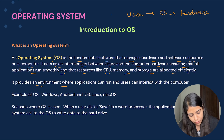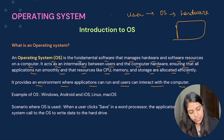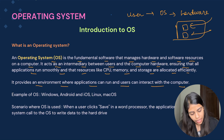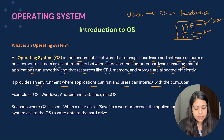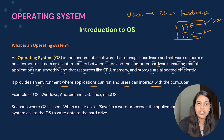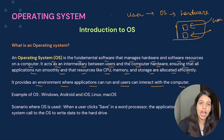The operating system provides an environment where applications can run and users can interact with the computer. For example, if you want to open WhatsApp on your laptop, you click on the WhatsApp icon, it opens, and if you want to send a message you go to the chat and click send. The operating system makes sure all of that is happening smoothly in the backend.